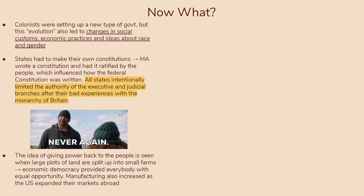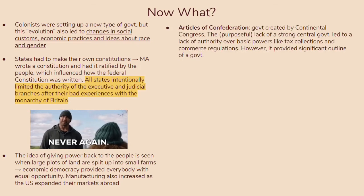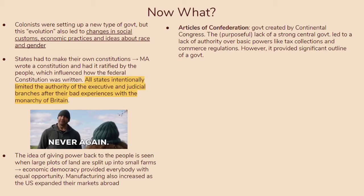They knew what it's like to have massive centralized power and how it can encroach on people's civil liberty and individual rights. There's also this idea of giving power back to the people, seen when large plots of land are split up into smaller farms given to many people. This economic democracy provided people with an equal opportunity — a level playing field. Manufacturing also increased as the U.S. expanded their markets abroad. One key takeaway from this chapter should be the Articles of Confederation government, created by the Continental Congress. The purposeful lack of a strong central government led to a lack of authority over basic powers like tax collection and commerce regulation — however, it did provide a significant outline of a government.